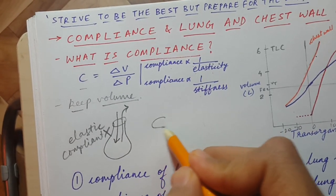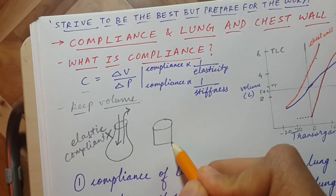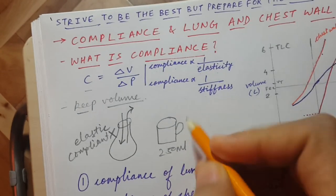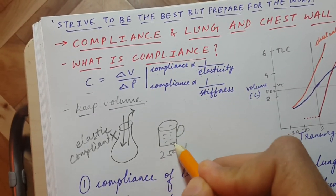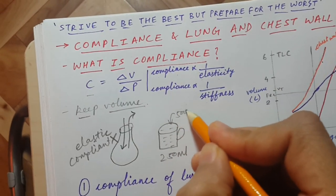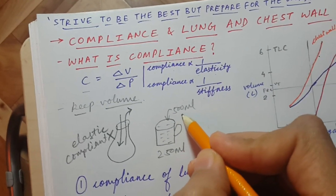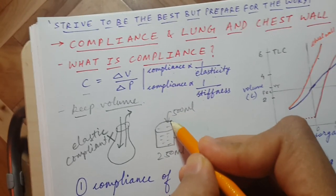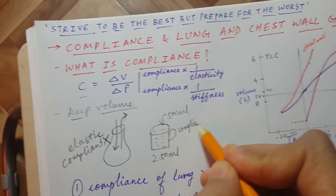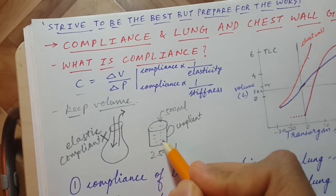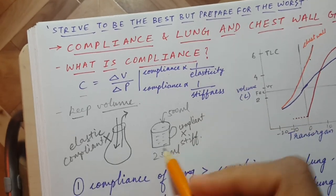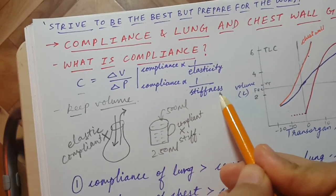The next example is a wooden mug that can contain 250 ml of volume. If you add 250 ml of water in it, can you add any extra water — say an extra 500 ml? No, you cannot add any extra volume. That's why it is not compliant; this wooden mug cannot expand and accumulate more volume. It is stiff, which explains why compliance is inversely proportional to stiffness.